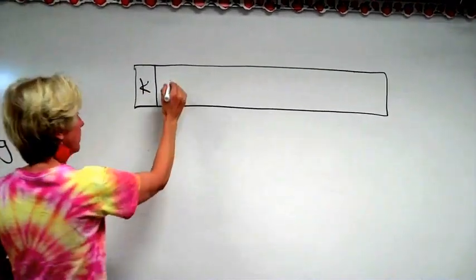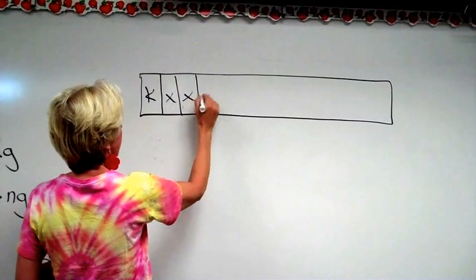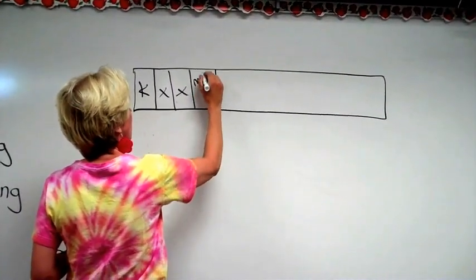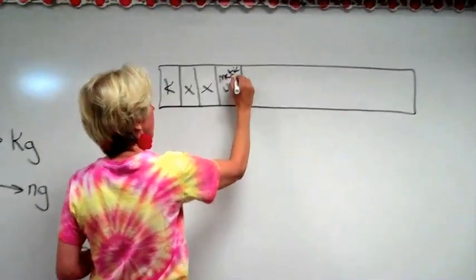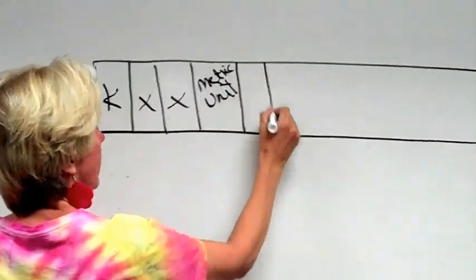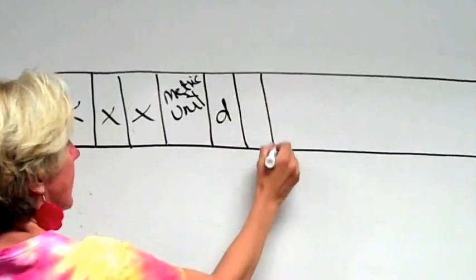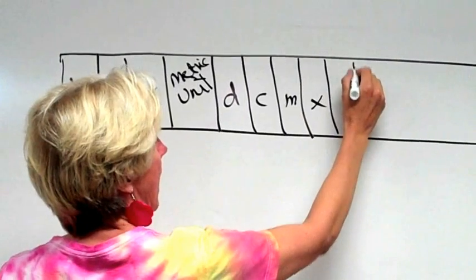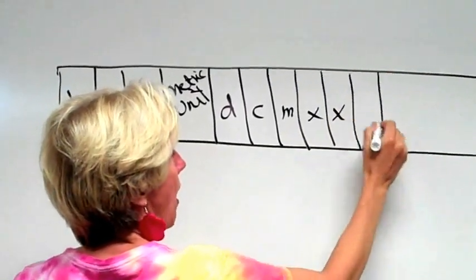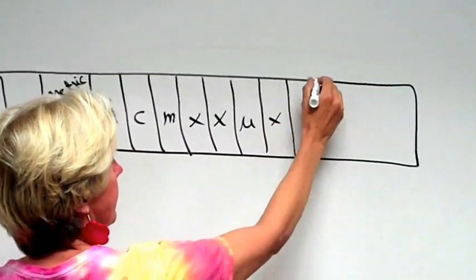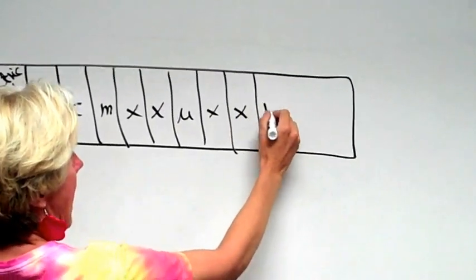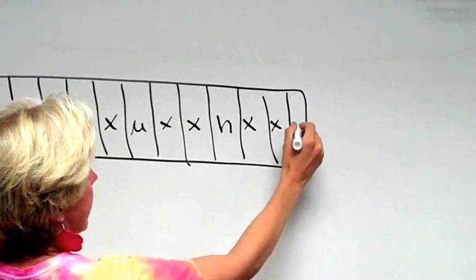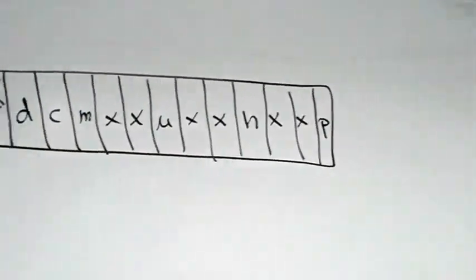Here comes kilo, then blank, blank, then in here we're just going to put the metric unit without any prefix. After that comes desi, centi, milli, leave it blank, leave it blank, micro, leave it blank, leave it blank, nano, leave it blank, leave it blank, and then right at the end we're going to put pico.